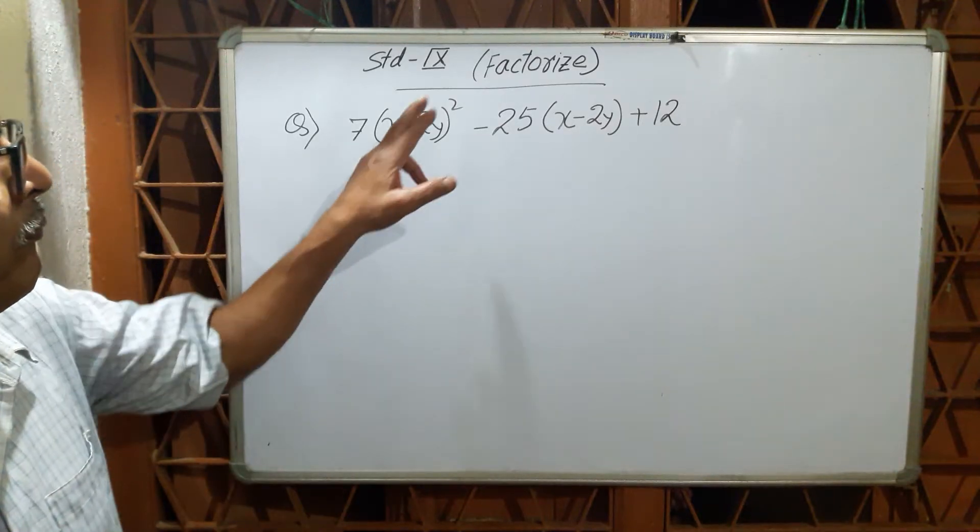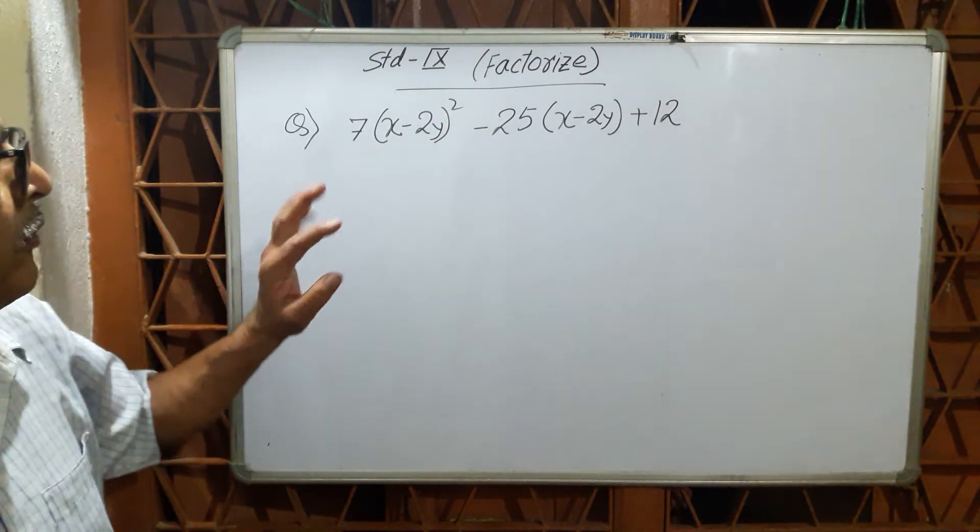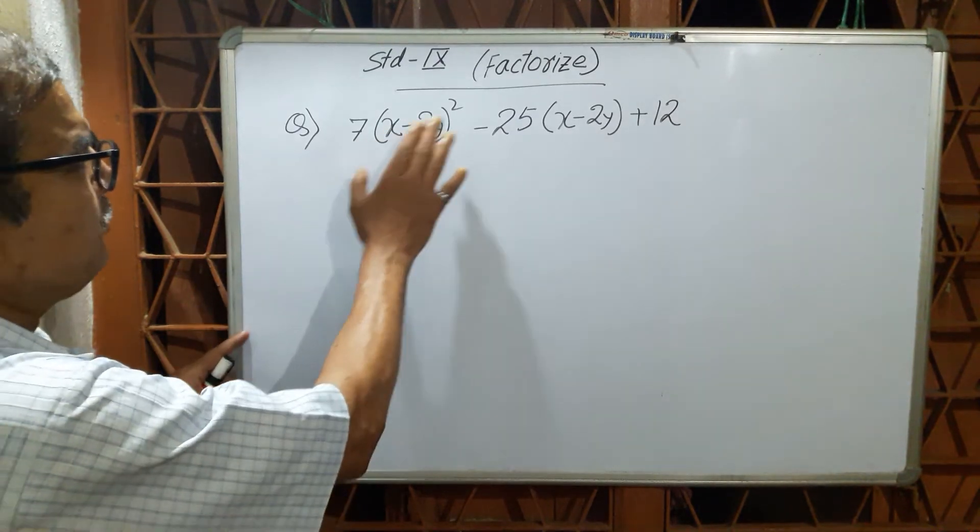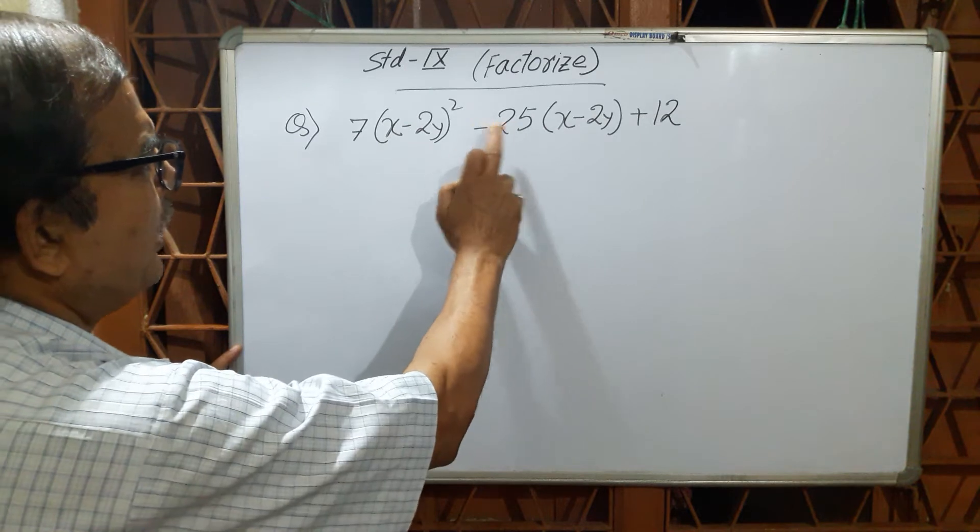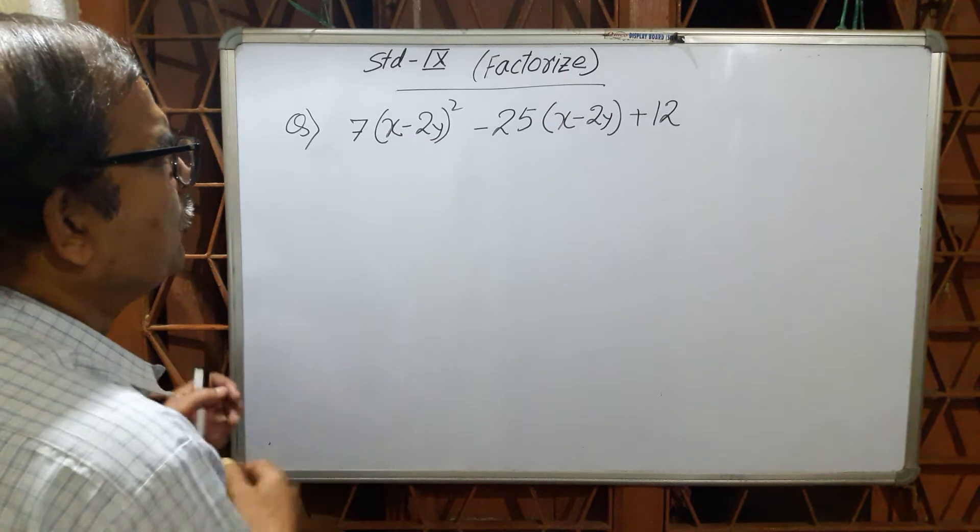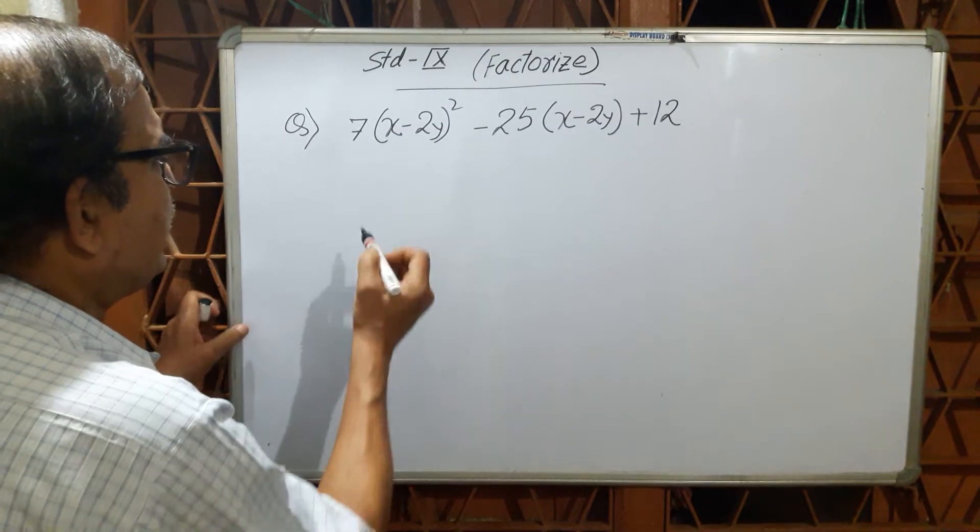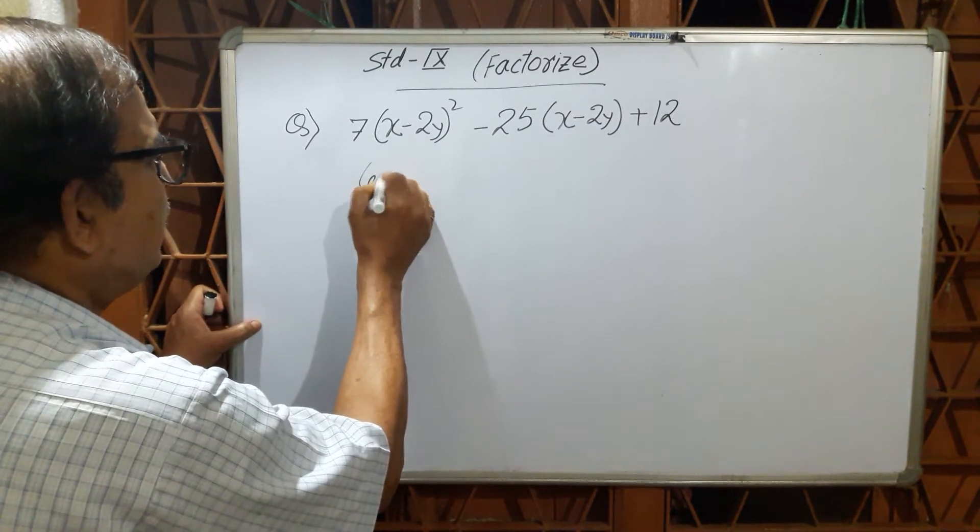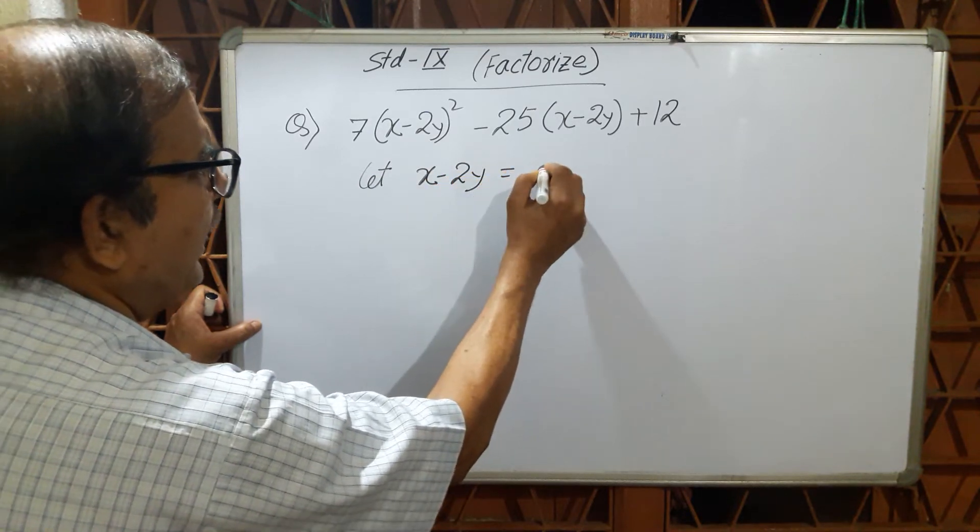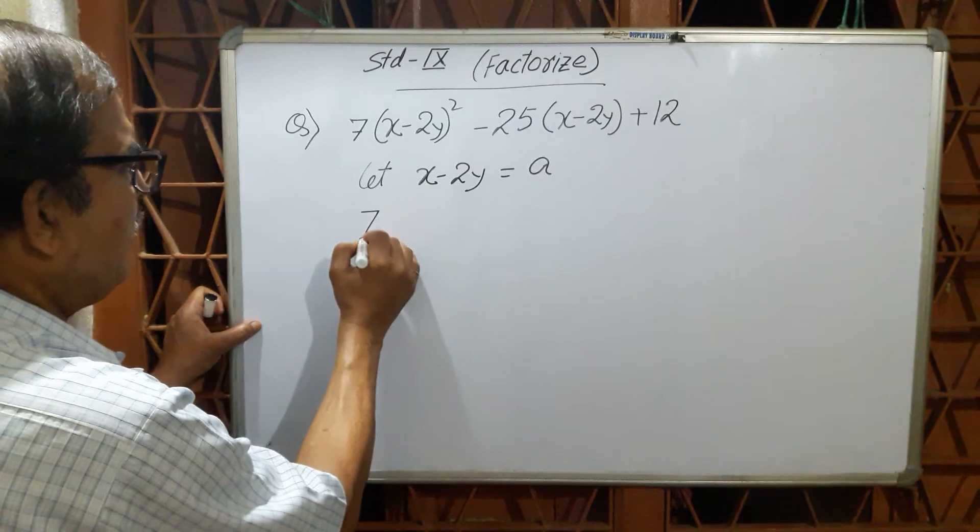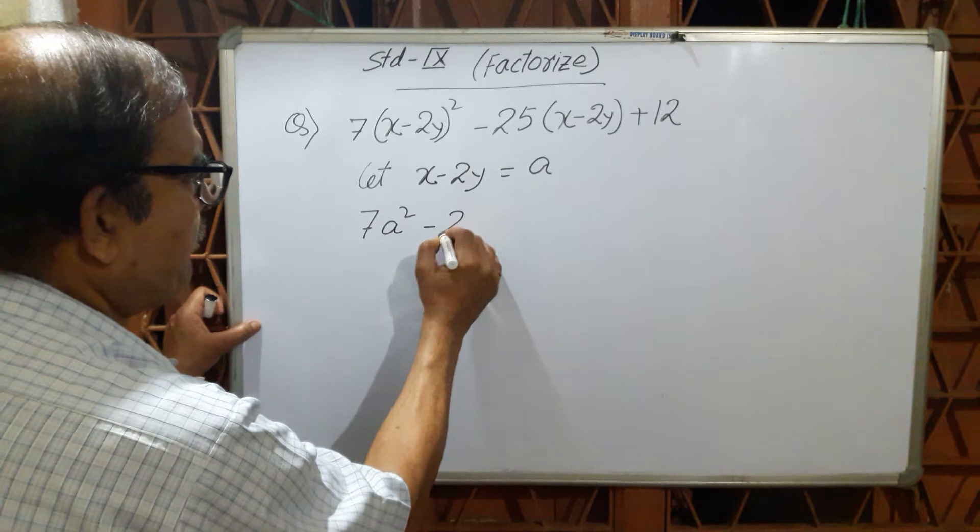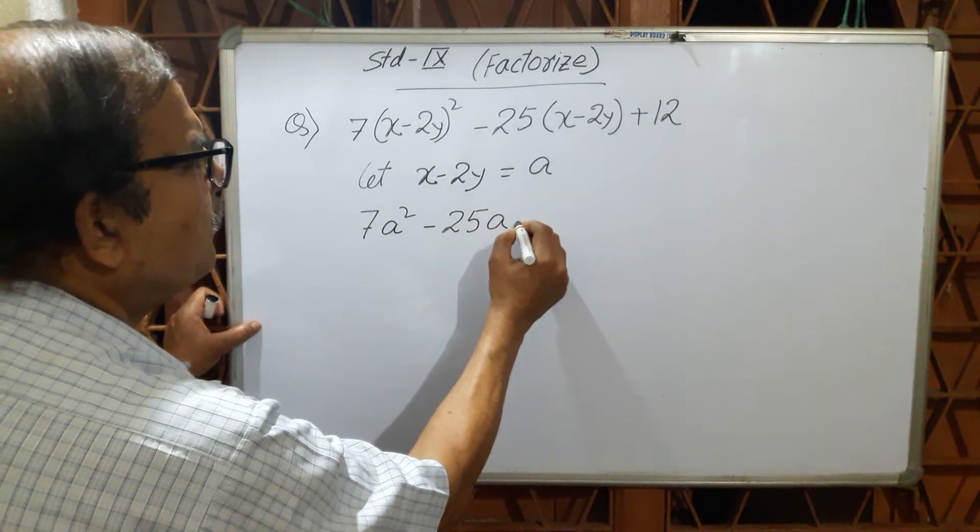Now this factor is the middle term factor. The question is 7(x-2y)² - 25(x-2y) + 12. Here x-2y is common. You can take it like this: let x-2y equal to a. Then the question will be now 7a² - 25a + 12.